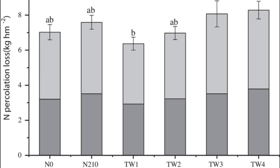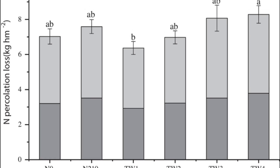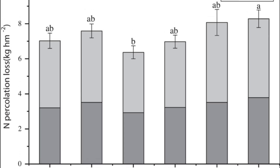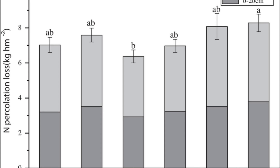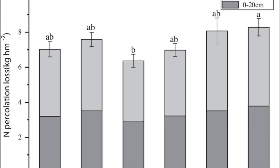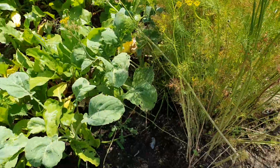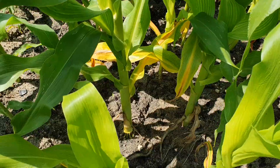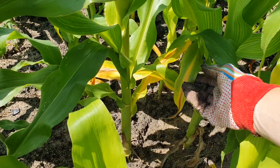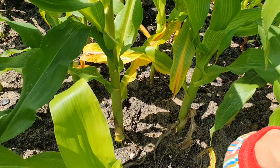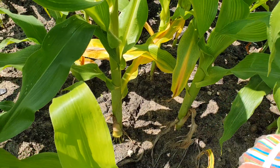Nitrogen deficiency is manifested by yellowing of the plant's leaves and even the stems — they turn purple, the lower leaves dry up, the plant's growth is inhibited, and the fruits are small. Plants also bloom poorly.